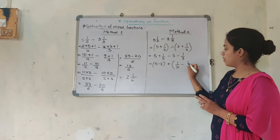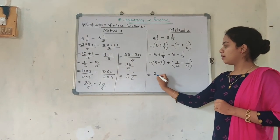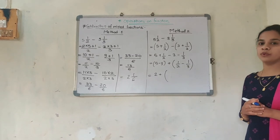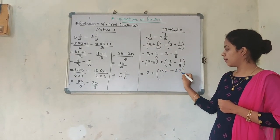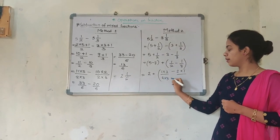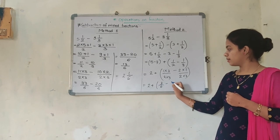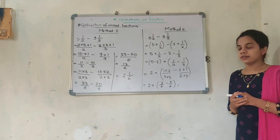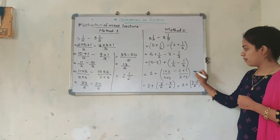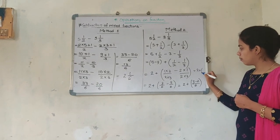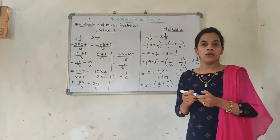So 5 minus 3 is 2, plus 1/2 minus 1/3. Denominators are not the same, so we cross multiply again: 1 into 3 minus 2 into 1, whole divided by 2 into 3. That gives 2 plus 3/6 minus 2/6. Denominators are same, so: 2 plus 1/6, which is 2 and 1/6. Both sides you can see — my answers are the same.